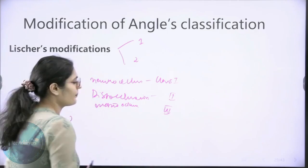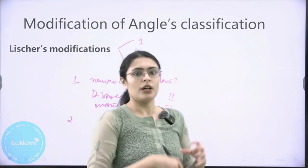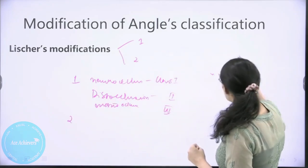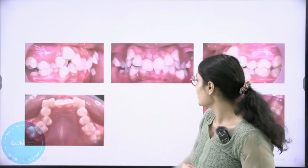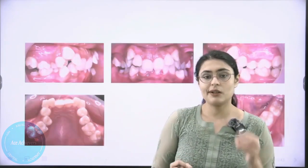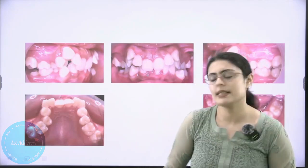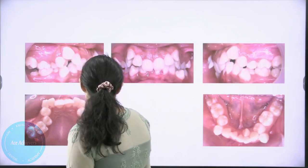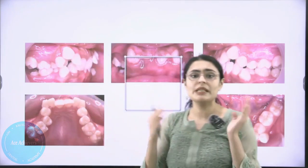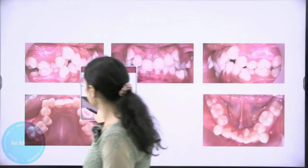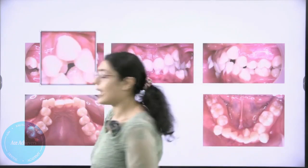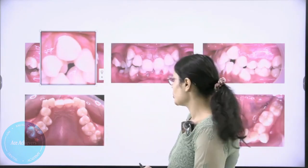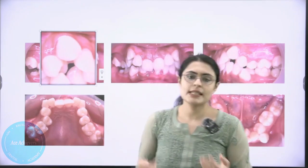Lister's second modification was using different terms with the suffix '-version' to describe tooth positions. Let's take this patient as a model to study these terms. The first term is mesioversion, which means the tooth is present more mesially than where it should be. As we can see, this canine is in mesioversion.